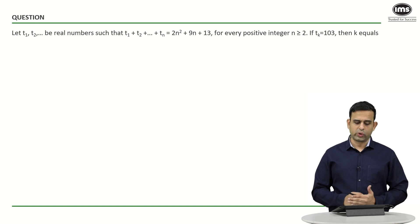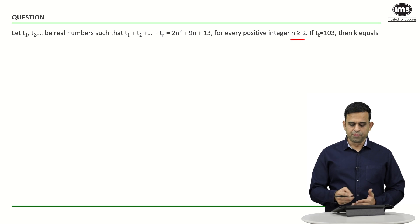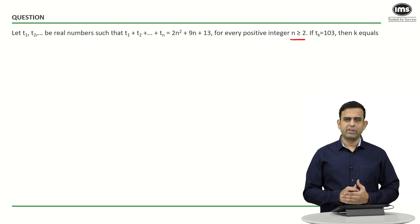happens to be 2n² + 9n + 13 for every positive integer greater than or equal to 2, and they've given t_k equals 103, and the objective is to find out the value of k.